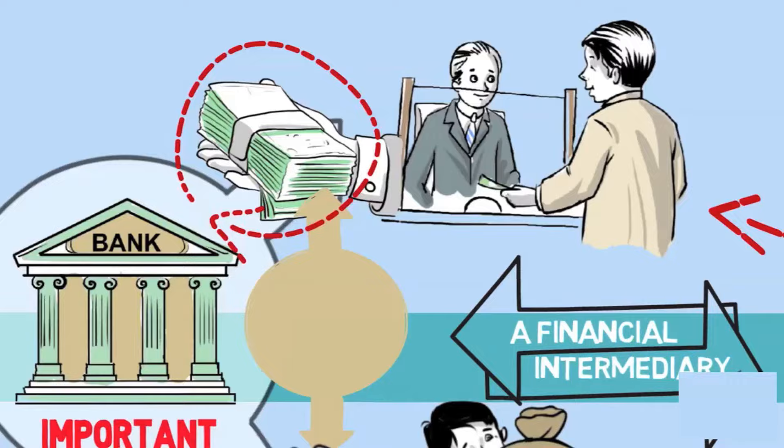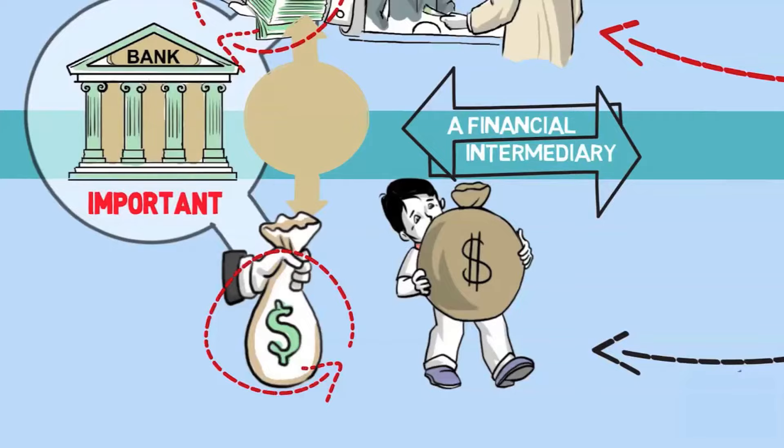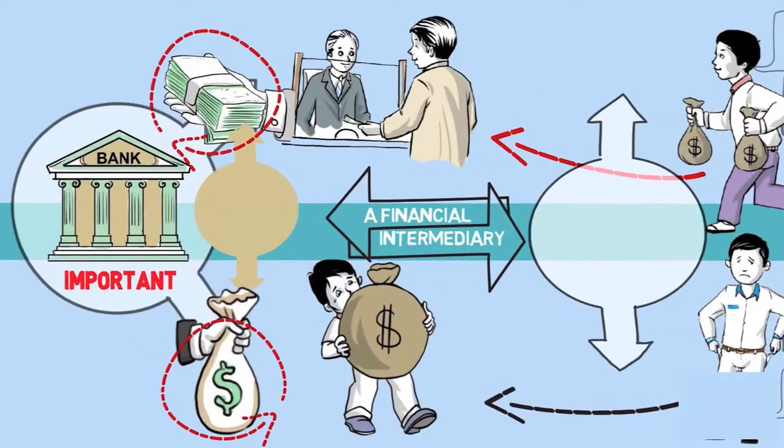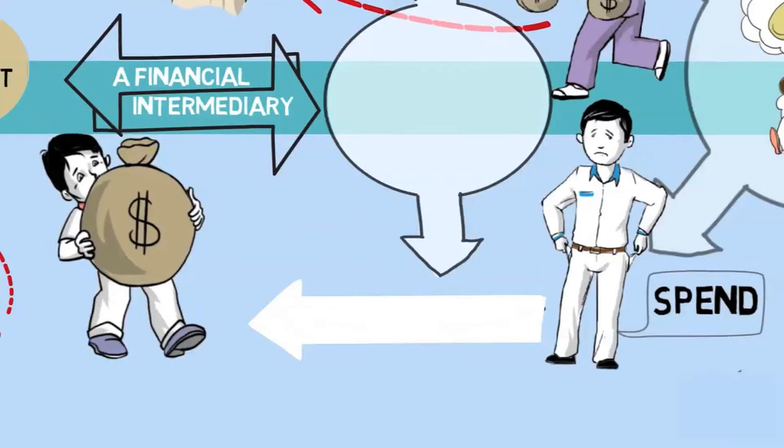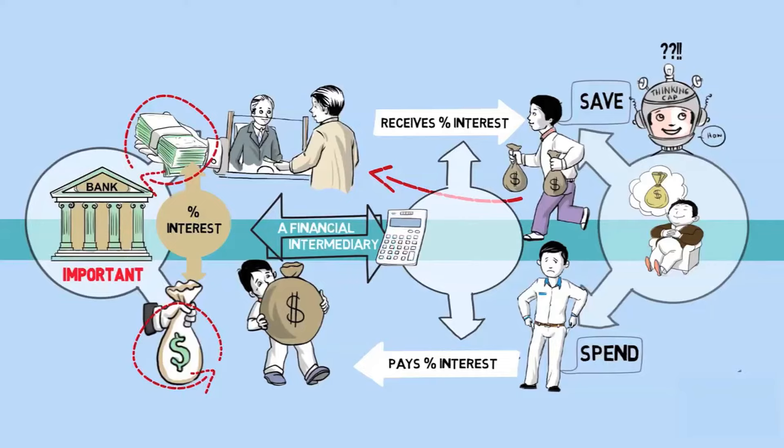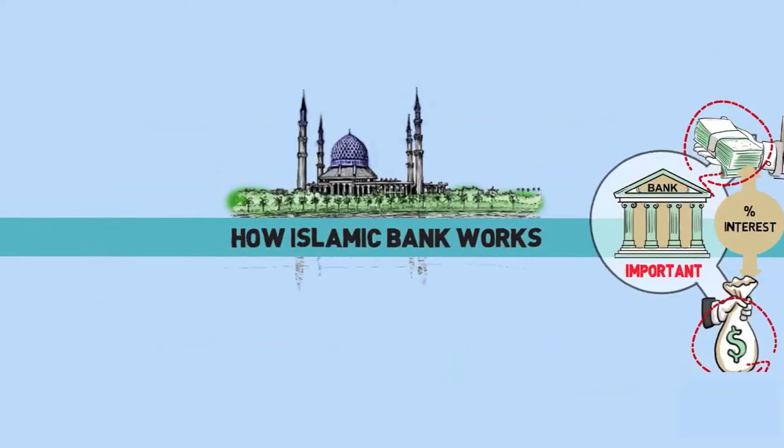You can see people depositing money on one side, and on the other side there are people who are approaching the bank to seek funding. Both the activities of deposit taking and providing funds are based on interest. A depositor would receive fixed interest on his deposits, and the fund seeker will have to pay a fixed percentage of interest on the money borrowed. The difference of these two interest rates becomes the bank's profit.